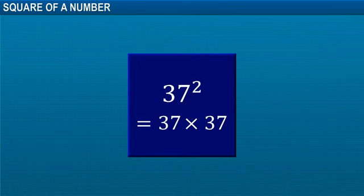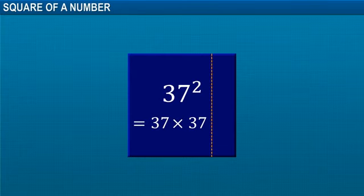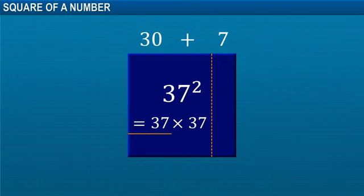If you find that a bit difficult, there is an easier way. We can simplify things if we write 37 as the sum of two numbers whose squares we can easily find, like 30 and 7.